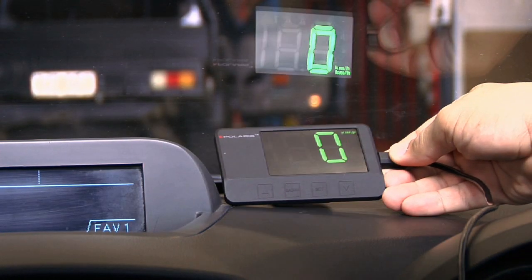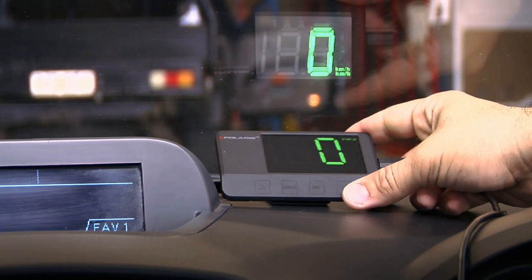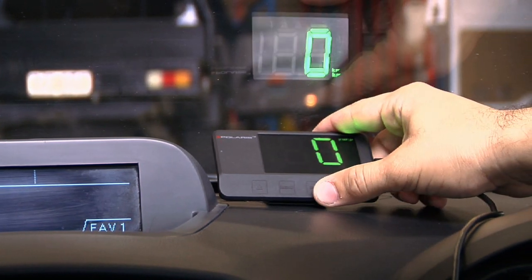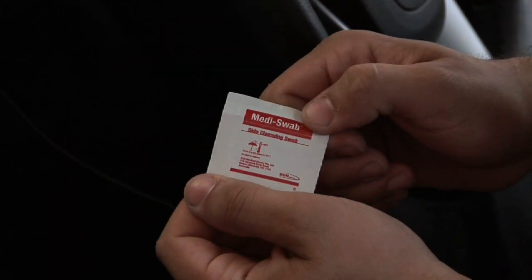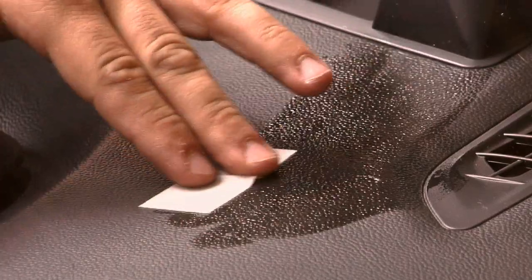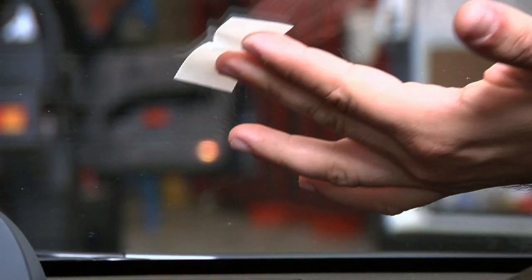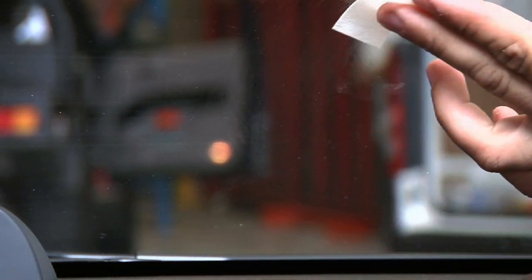Position the HUD on your dash to find the best reflective position that suits the driver. Take the alcohol wipe that's provided and thoroughly clean the dash and the area of windscreen just above the HUD where the reflection will be displayed.